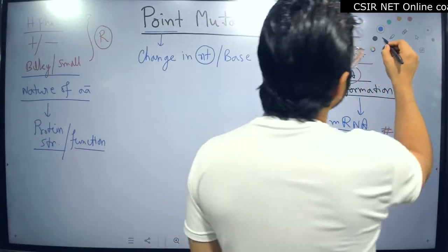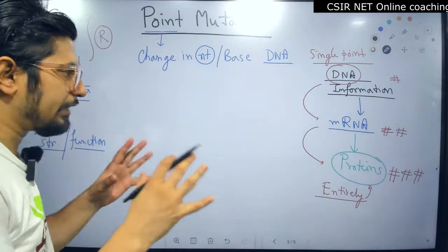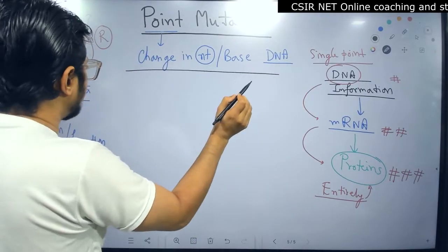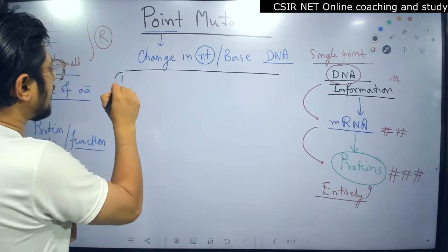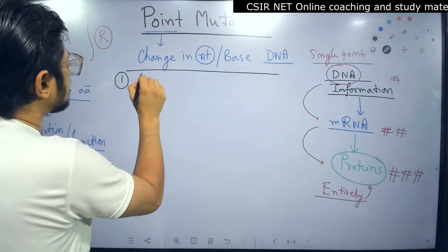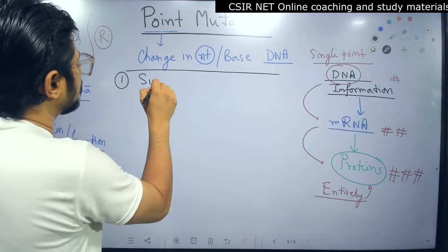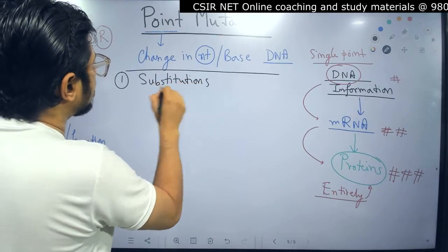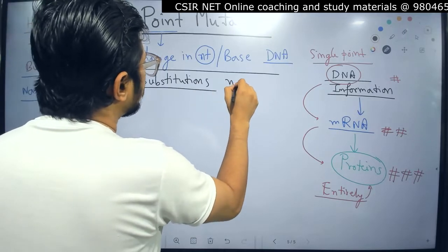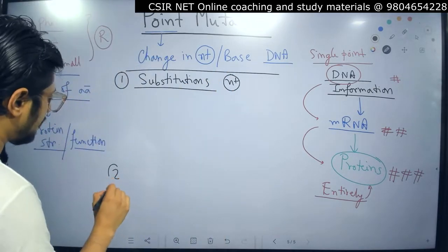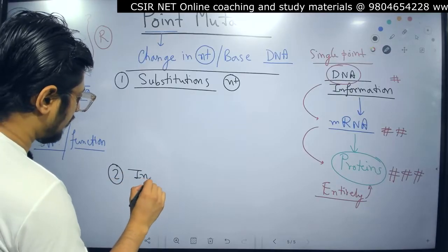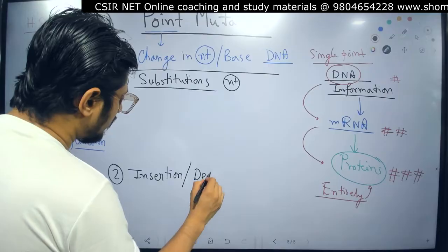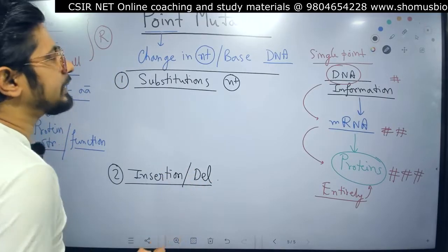Now we are going to talk about the types of point mutations, and I divide them into two different kinds. The first type is substitution — a substitution in the nucleotide. The second type is insertion or deletion. These are two separate types.